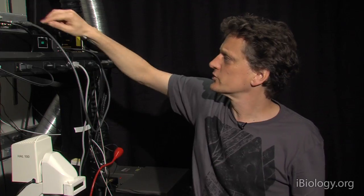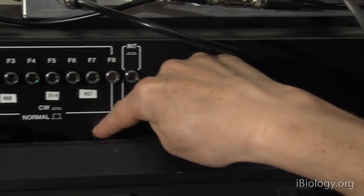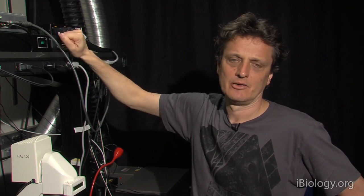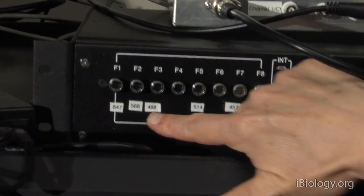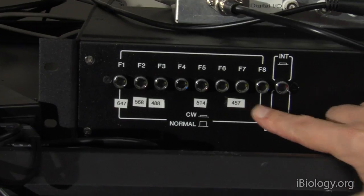This one controls the AOTF, an Acousto Optical Tunable Filter. And that is basically a very fast wavelength changer. So that AOTF is sitting there in front of the lasers in the back. And that will select, in this case, either the blue or the yellow line coming through. And can do that at microsecond timescales.